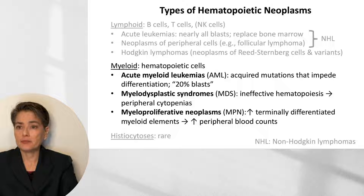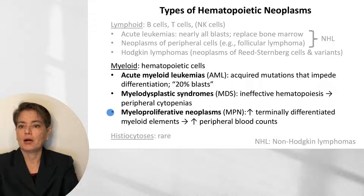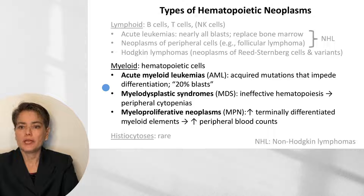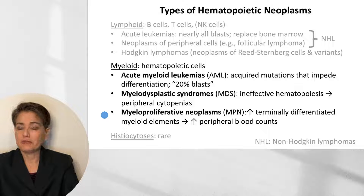This slide should look familiar — it shows the different types of hematopoietic neoplasms. We'll be focusing on lesions of hematopoietic cells, further classified as acute myeloid leukemias (AMLs), myelodysplastic syndromes (MDS), and myeloproliferative neoplasms (MPN). AMLs have acquired mutations that impede differentiation and are defined as having at least 20% blasts. MDS involves ineffective hematopoiesis leading to peripheral cytopenias. MPNs involve increases in terminally differentiated myeloid elements, leading to increased peripheral blood counts.